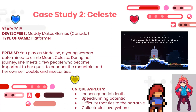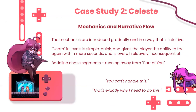The most obvious analogy from a writing standpoint is that Mount Celeste is an extended metaphor for overcoming mental health struggles — that's been analyzed to death elsewhere. Uniquely, death in this game is pretty inconsequential; the game will even make fun of you for dying a lot. Celeste does not punish you for dying. Mechanics are gradually introduced in a way that parallels how you have to learn to overcome certain hurdles in life.